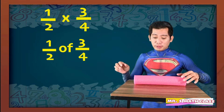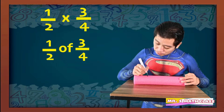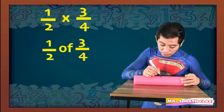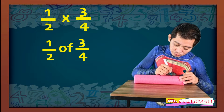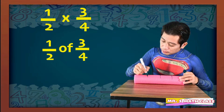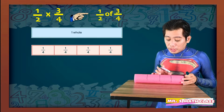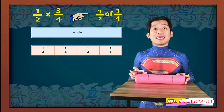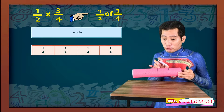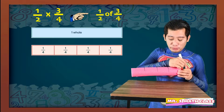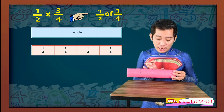To get three-fourths of this whole, we'll divide this whole into four equal parts. We now have four equal parts — we call each one a fourth. So we have one fourth, another fourth, another fourth, and another fourth. Since we need three-fourths, we'll get three out of the four parts.